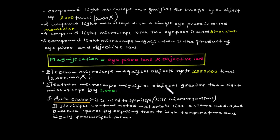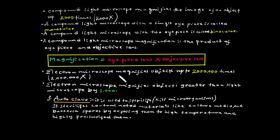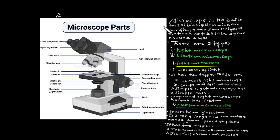The electron microscope magnifies objects greater than a light microscope by 1,000 times. The compound light microscope and electron microscope differ greatly in their magnitude of magnification.